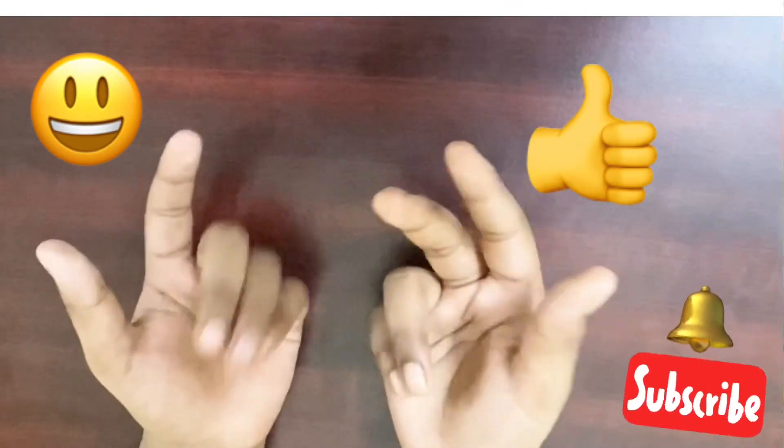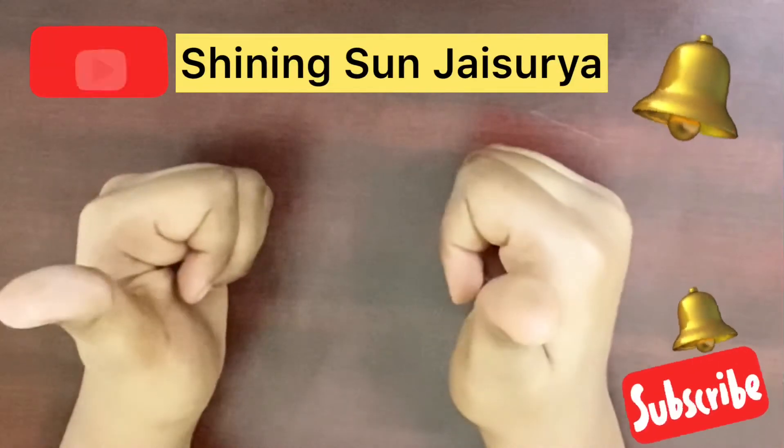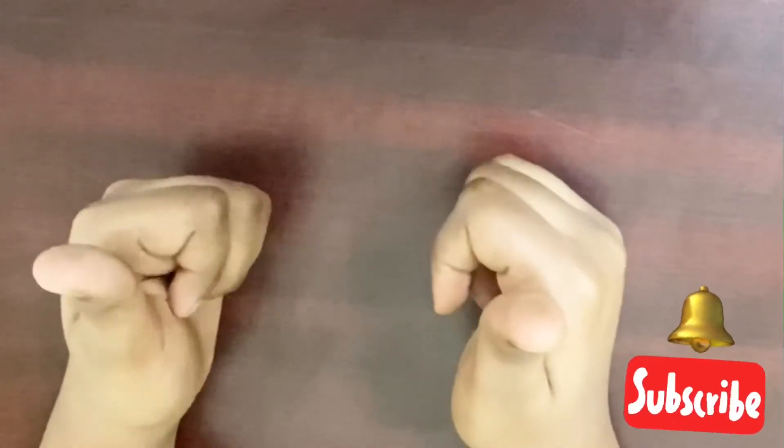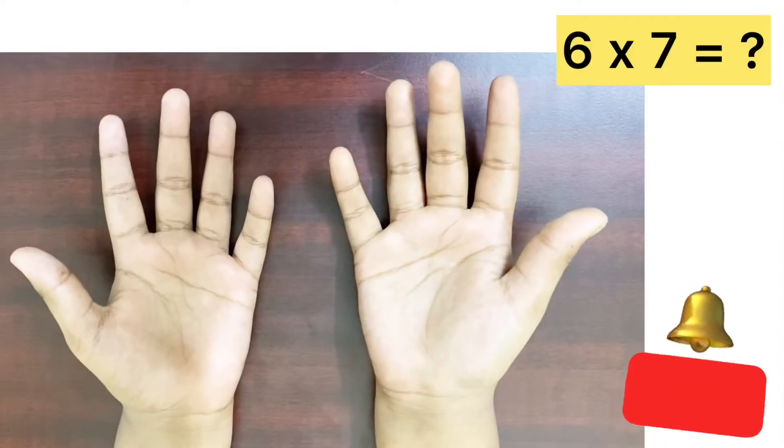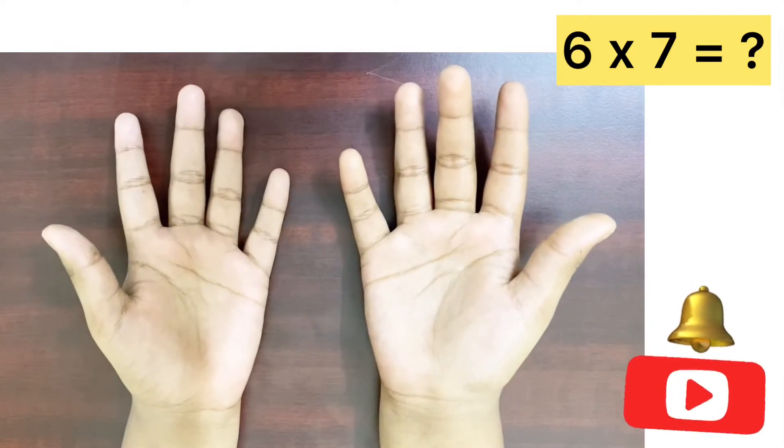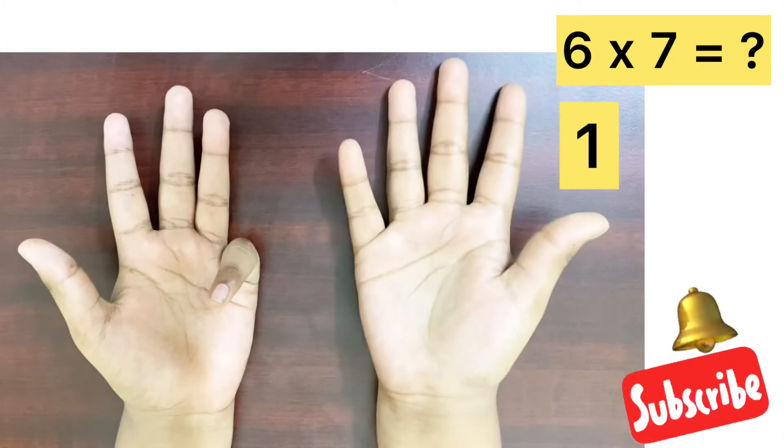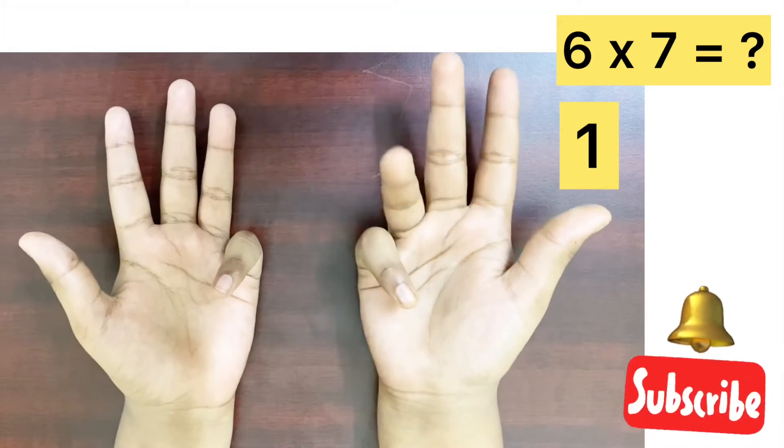Let's see another example with different situation. Before that, subscribe to our channel for more useful videos. Use 6 multiplied by 7. First, fold your left hand fingers till the number 6 down. Now, fold your right hand fingers till the 7 down. 6, 7.